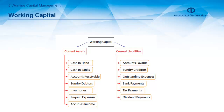Current assets of a company include cash in hand and in banks, accounts receivable, sundry debtors, inventories, prepaid expenses, and accrued income. Current liabilities include accounts payable, sundry creditors, outstanding expenses, bank payments, tax payments, and dividend payments.